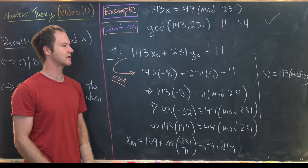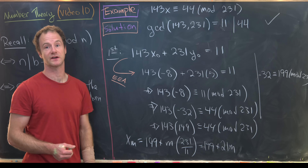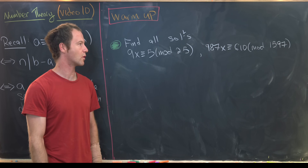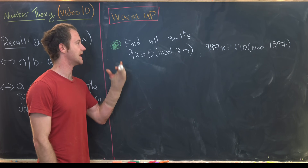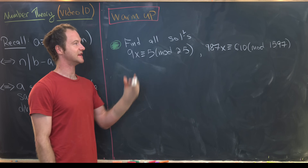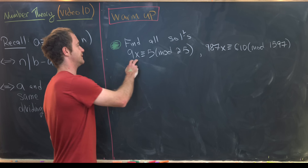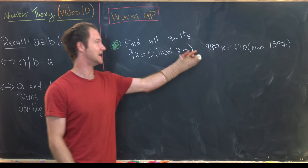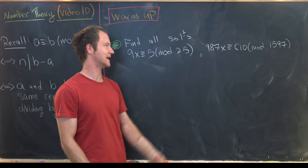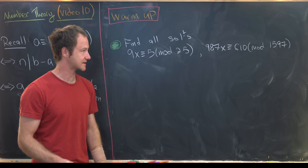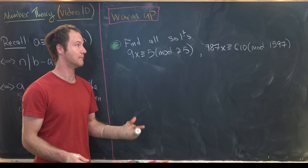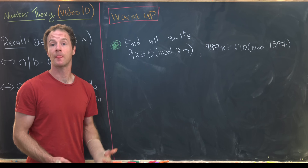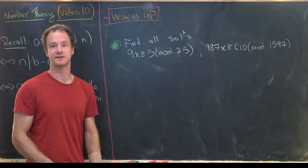For warm-up exercises, solve these two congruences: 9x ≡ 5 mod 25, and 987x ≡ 610 mod 1597.